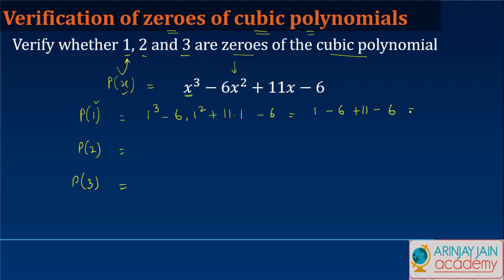What does this prove? This proves that 1 is a zero of the cubic polynomial which is given to us, P(1) = 0.